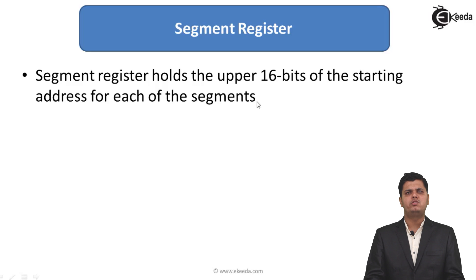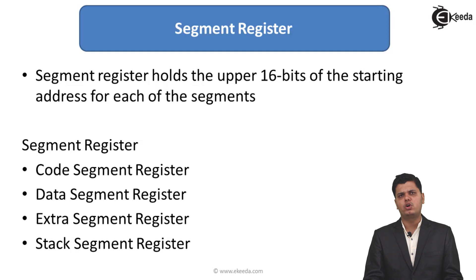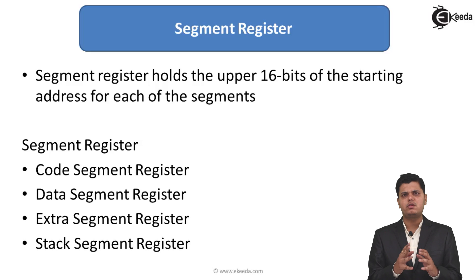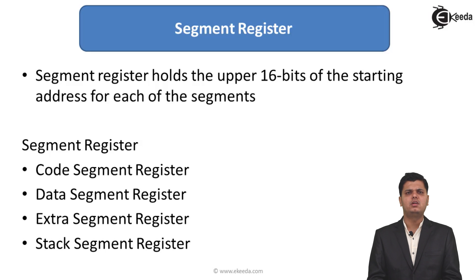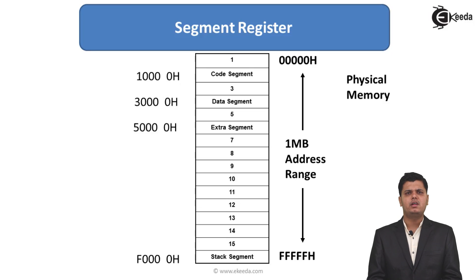The segment register holds the upper 16 bits of the starting address for each of the segments. Each segment starts from some address, and the physical address is 20 bits. Among the 20 bits, the higher 16 bits are stored in the segment register. For storing this upper 16-bit address, the 8086 has four segment registers: code segment register, data segment register, extra segment register, and stack segment register.